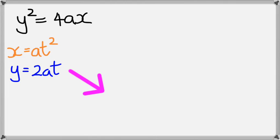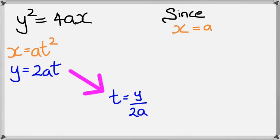I'm going to rearrange y here, because it's just substitution at the end of the day. So t is equal to y divided by 2a. Now, since we have x equals at², what I'm going to do is substitute that t with y over 2a. That's squared.